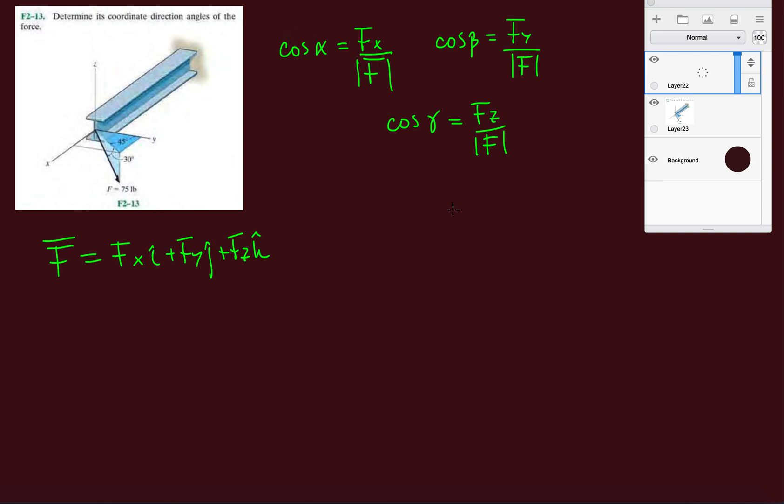There's a few ways to do this. They tell you the 75 pound force makes an angle of 30 degrees with the xy plane. It makes an angle of 30 degrees with the xy plane, and if you keep extending the z axis, you know that this full angle here should be 90 degrees, so we know that this is 60.